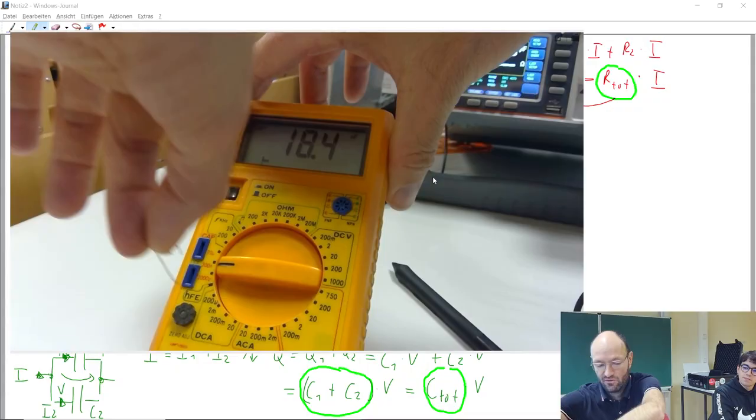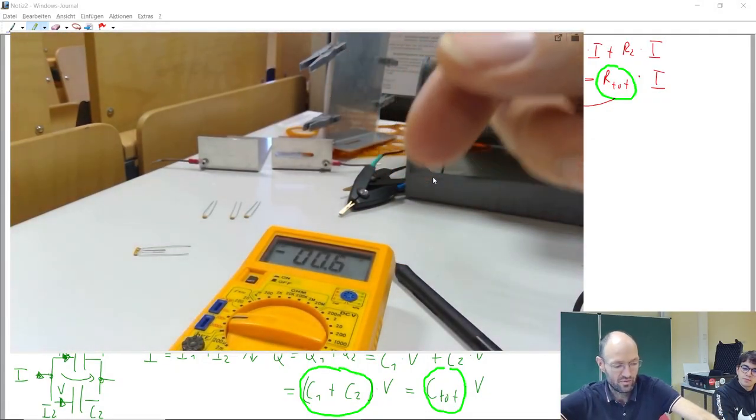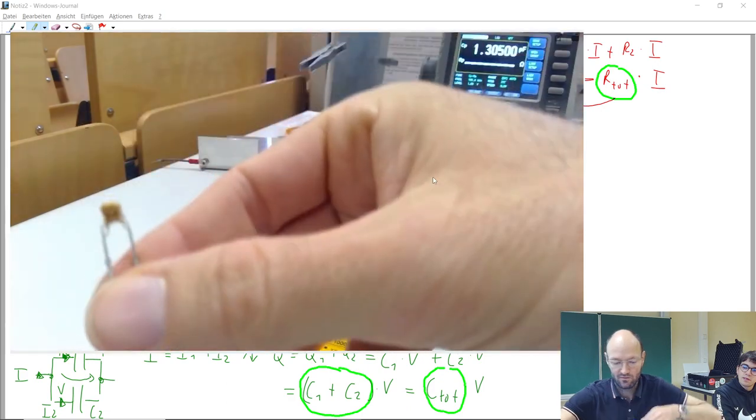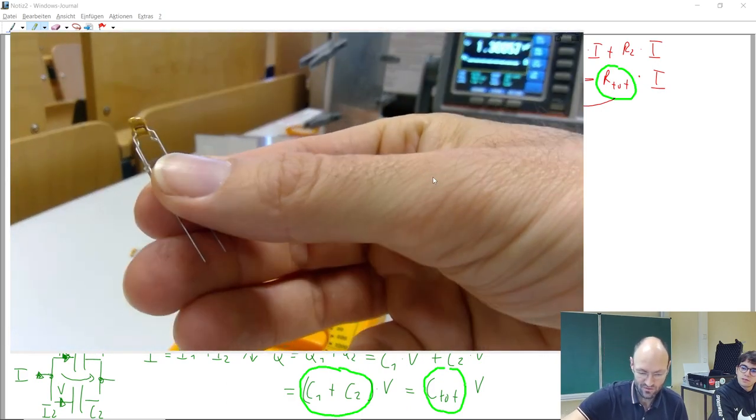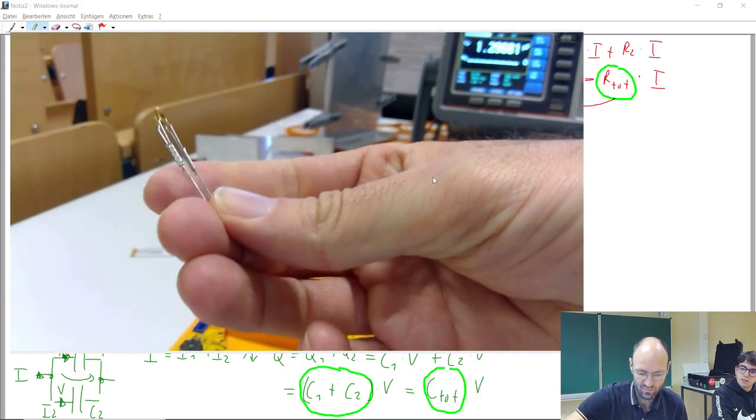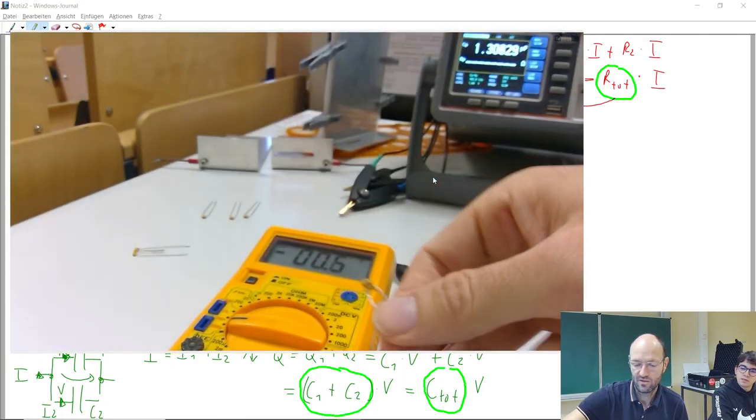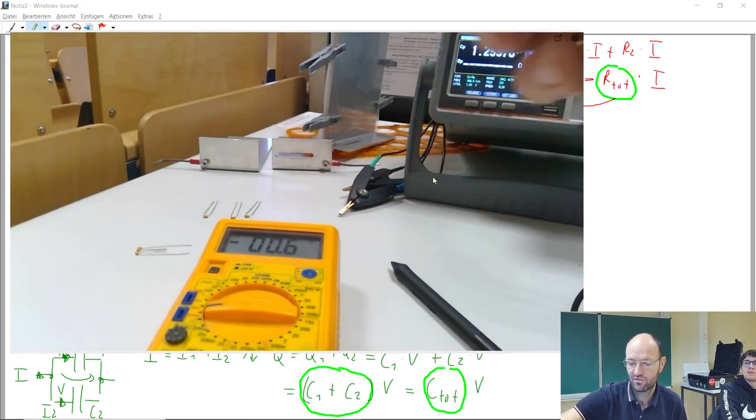So let's disconnect this once again. And so the last thing that I've prepared looks a little bit odd, but it's, you can see it's two capacitors and they are now connected in parallel to each other. And so if I measure the capacitance of these two, what should I get?